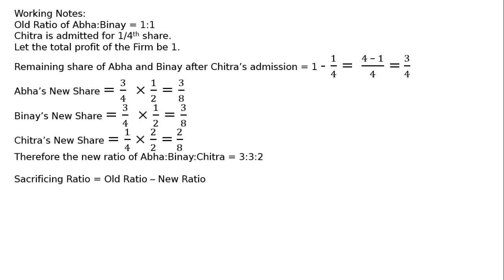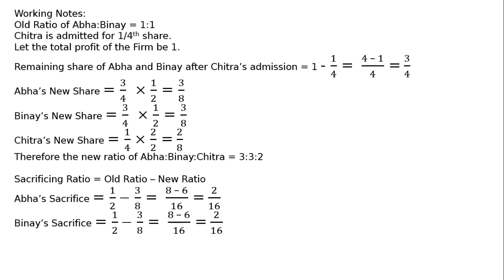Sacrificing ratio equals old ratio minus new ratio. Abha's sacrifice equals old share minus new share: 1/2 minus 3/8 equals (LCM 16) 8 minus 6 = 2/16. Vinay's sacrifice equals 1/2 minus 3/8 equals 8 minus 6 by 16, that is 2/16. Therefore the sacrificing ratio of Abha to Vinay is 2:2, or 1:1.